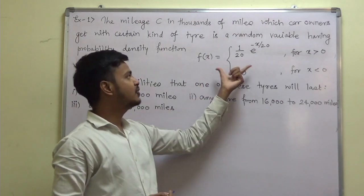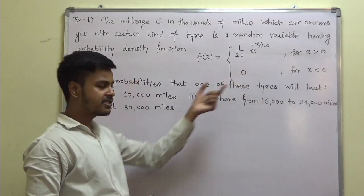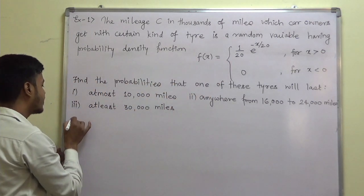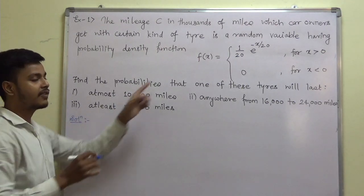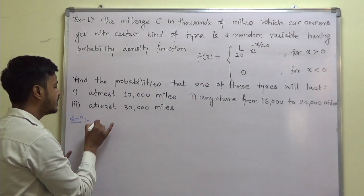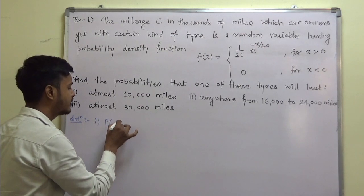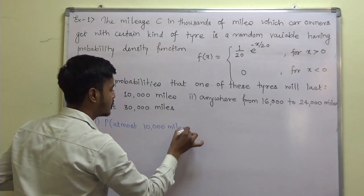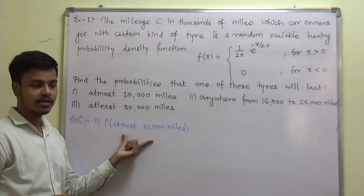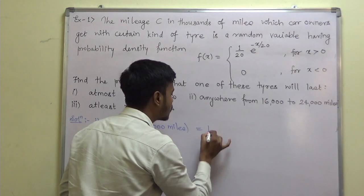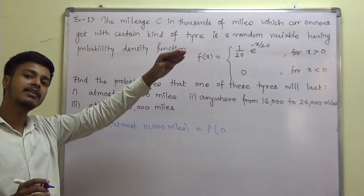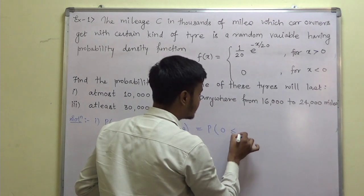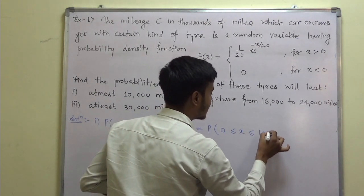In solving the problem, you can start with the given f(x). Note: in the exam you have to write the given function f(x). Now let us find out the first part — the probability of at most 10,000 miles. At most means the maximum is 10,000 miles and the minimum should be 0, so 0 ≤ x ≤ 10,000 miles.